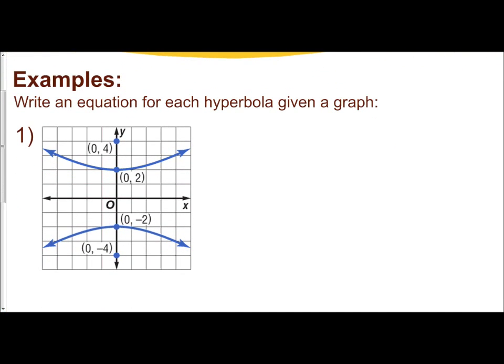What I would first do is identify whether it's vertical or horizontal, which is very easy to do from the graph. Since it's opening up and down, that means vertical. What that allows me to do is it allows me to know what my standard form should be.